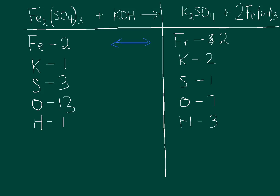Moving to the next metal — potassium. I have two potassiums on the product side and only one on the reactant side. I'll put a coefficient of two in front of the potassium on the reactant side. That multiplies everything there by two, changing the number of potassiums on the reactant side to two. Now my potassiums are balanced.